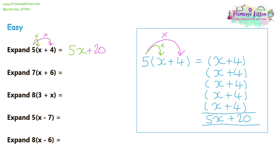Let's try this with question two: 7(x + 6). Rather than writing x plus six seven times, we multiply the seven by the x — seven multiplied by x is 7x — and then we multiply the seven by the six — seven times six is 42. A common mistake here is to only multiply the first number and forget to multiply the second number. So it's very important that you do multiply both.